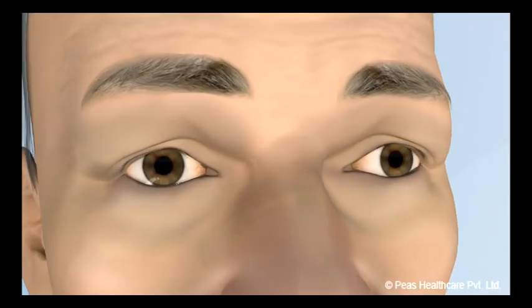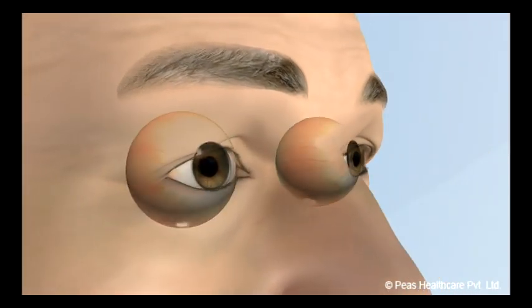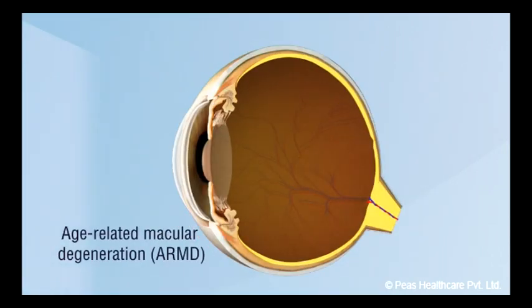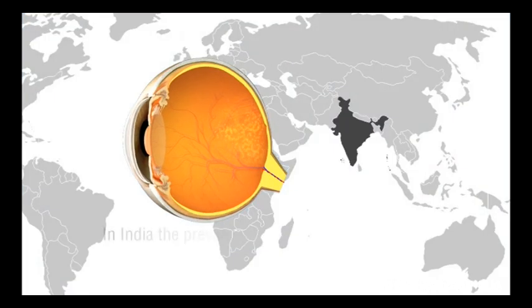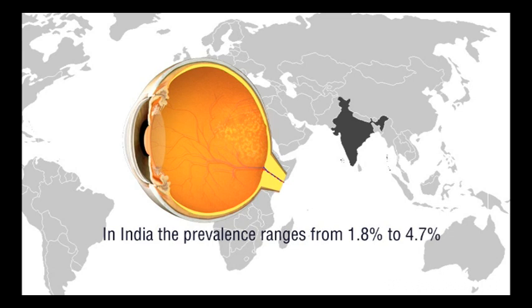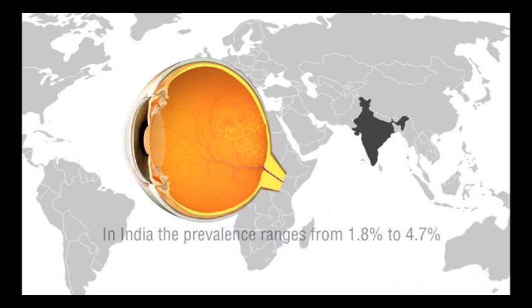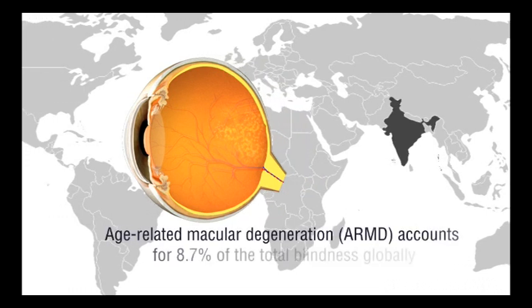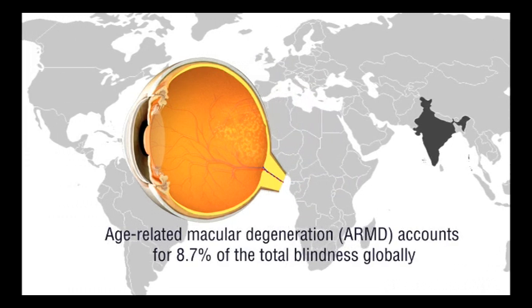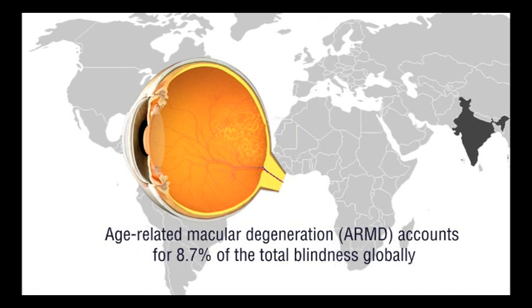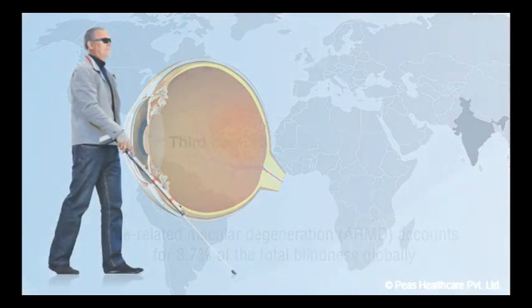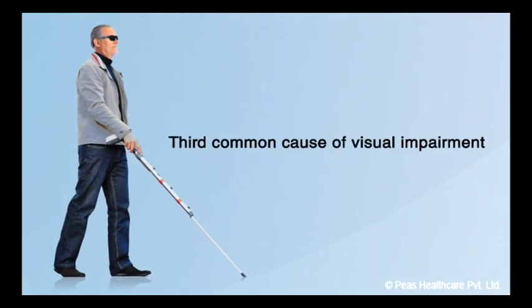Age-related macular degeneration is the most common cause of vision loss in those aged over 50. In India, the prevalence ranges from 1.8% to 4.7%. Age-related macular degeneration or ARMD accounts for 8.7% of the total blindness globally and is the third common cause of visual impairment.